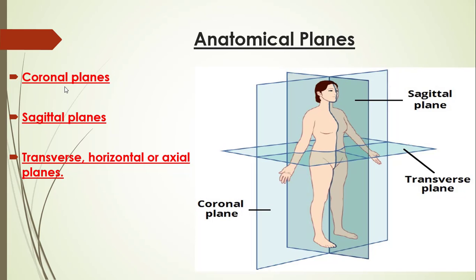What are the anatomical planes? There are three major planes that pass through the body in the anatomical position. First, the coronal planes: these planes are oriented vertically and divide the body into anterior — front — and posterior — back — parts.